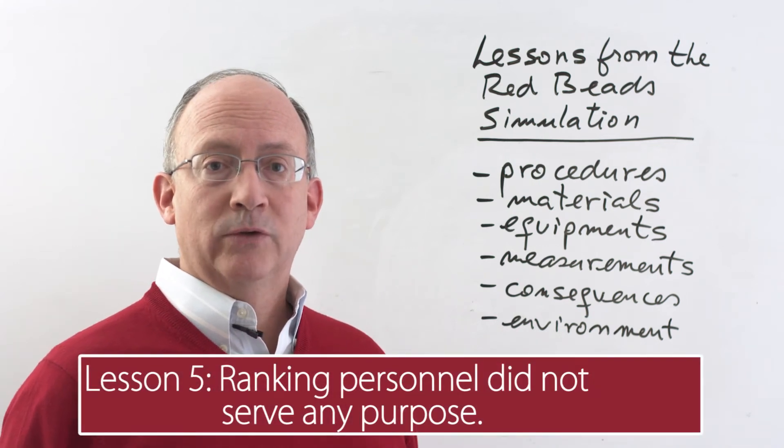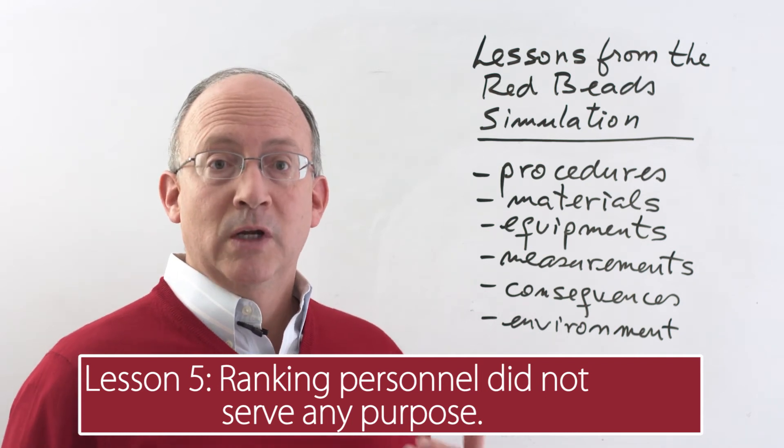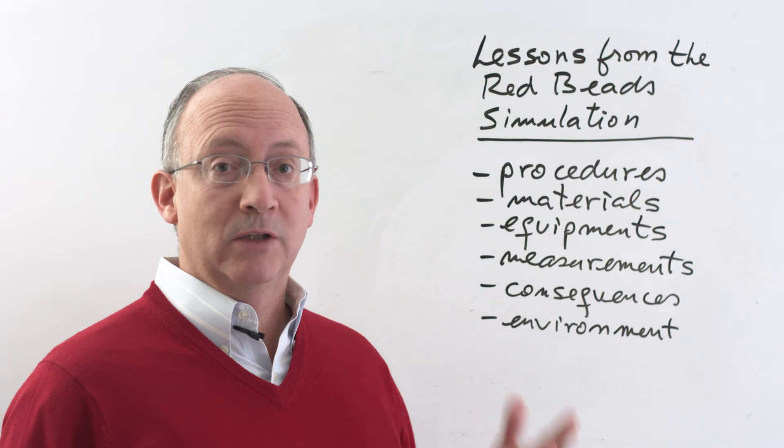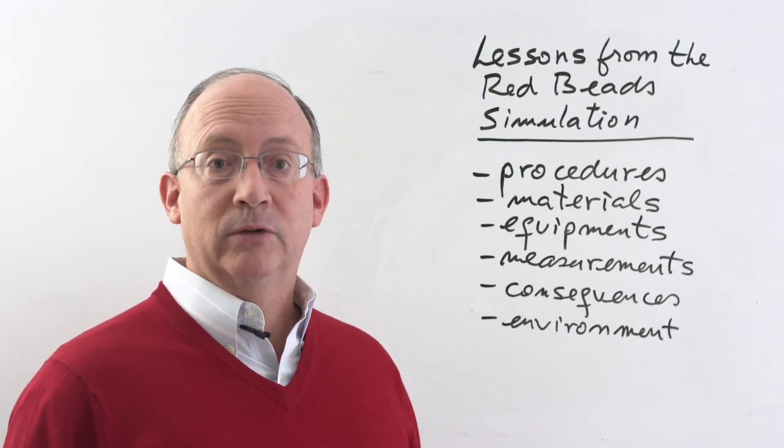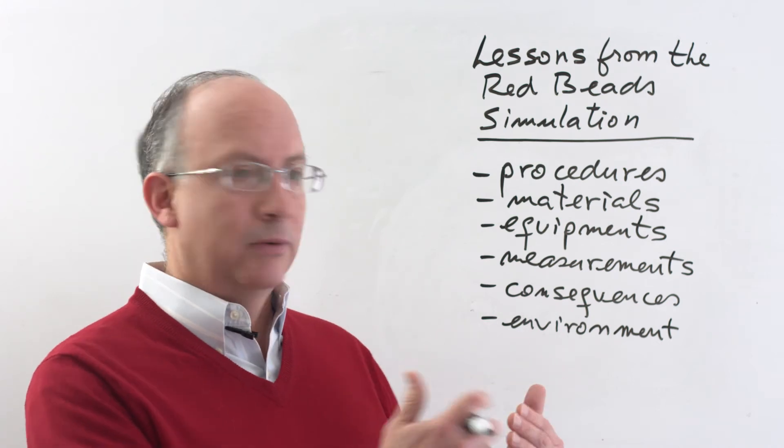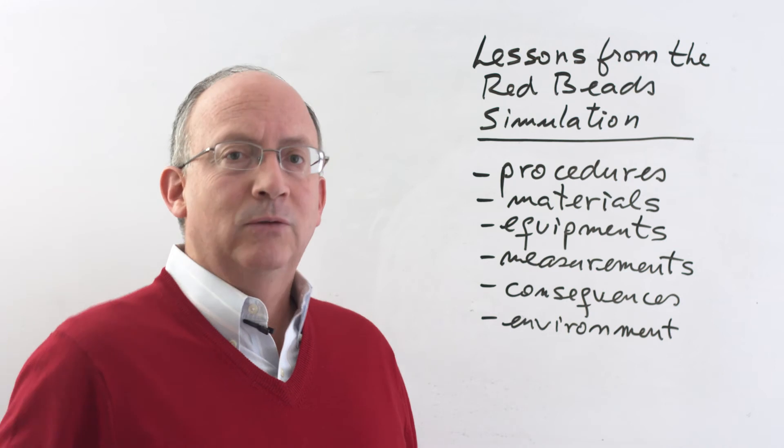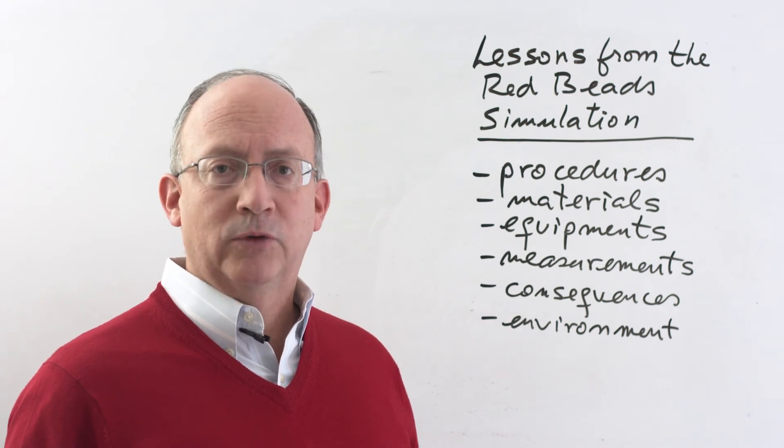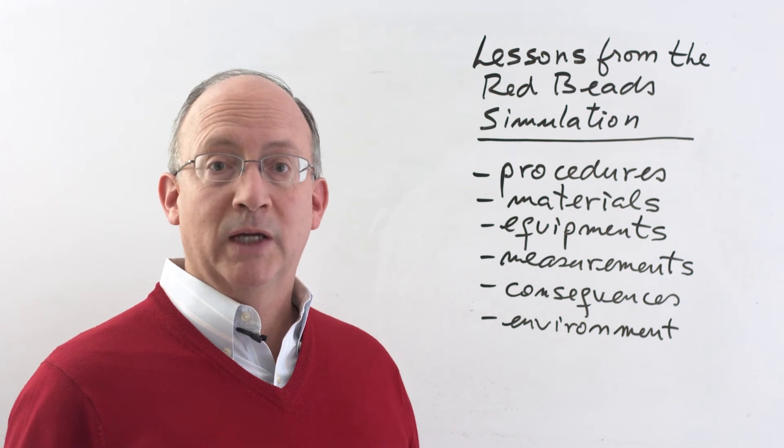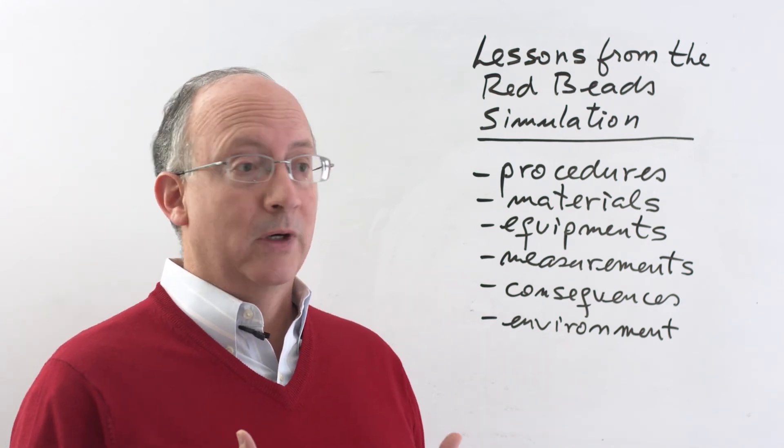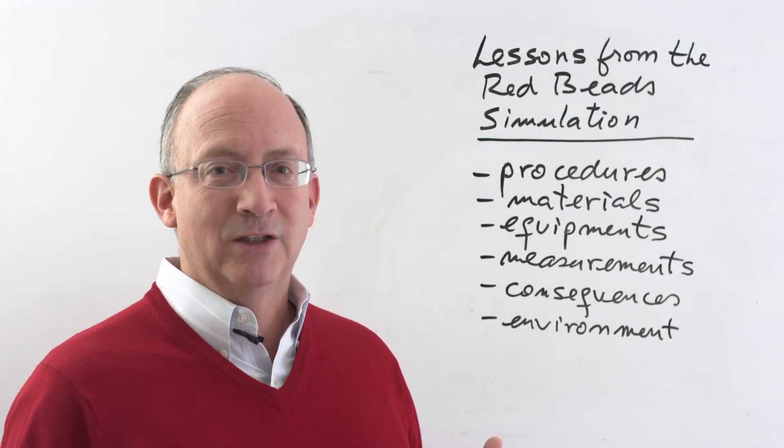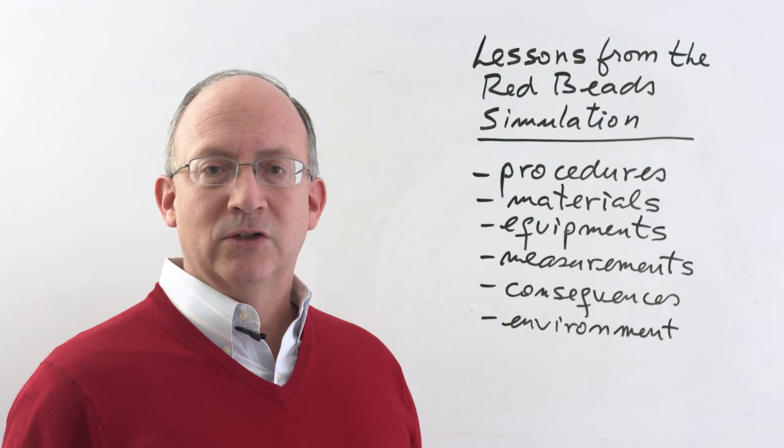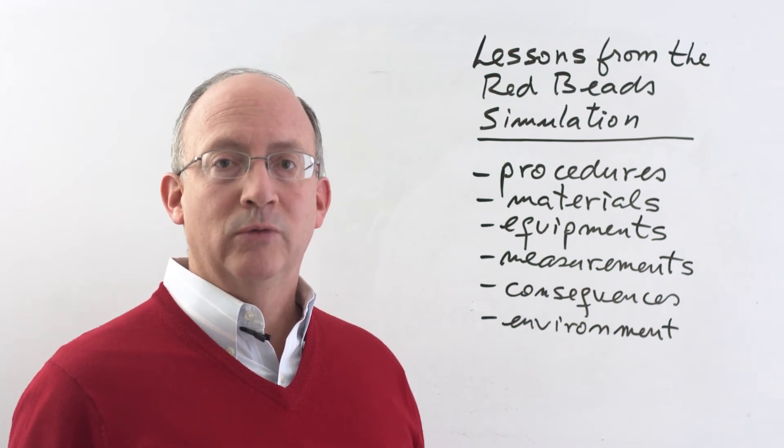The next lesson would be that one of the favorite managerial practices, which is to rank personnel by some type of metric. In our case, we were ranking all the willing workers by the number of red bits that they got individually. And by the way, that's how we ended up getting rid of some workers and keeping others. That actually served no purpose. When you look at the various charts of the red bits that we have, then you will see that, in fact, the production didn't get any better after we got rid of a couple of workers. And then we tried with what you might have considered our top performers, which were now kind of freed up of the curse of being associated with low performers, and yet nothing changed. So that was really not a real factor of production.